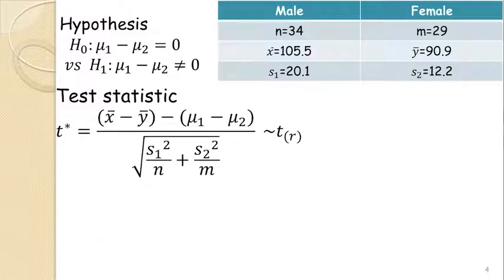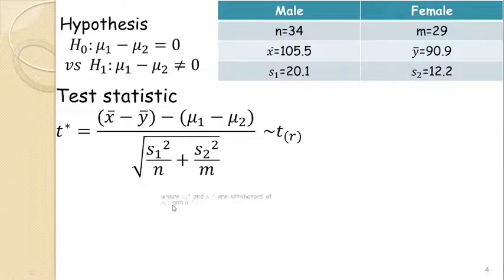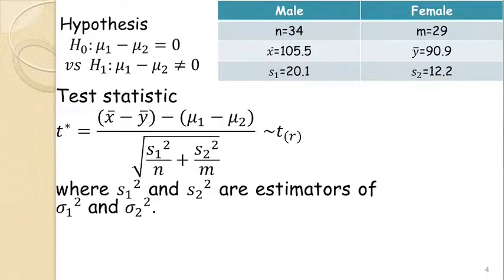The test statistic T* is equal to (x̄ − ȳ) − (μ₁ − μ₂), divided by the square root of s₁² / n plus s₂² / m. This T* follows a t-distribution with R degrees of freedom, where s₁² and s₂² are estimators of σ₁² and σ₂² respectively.